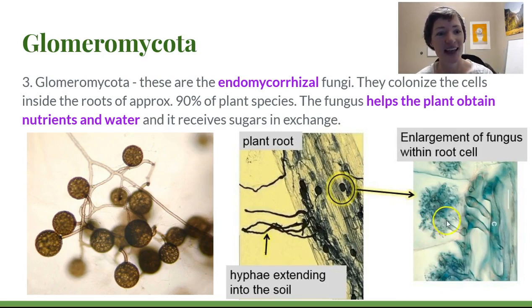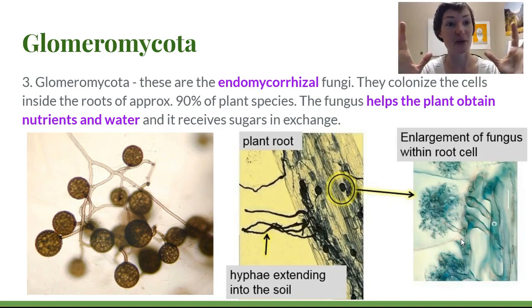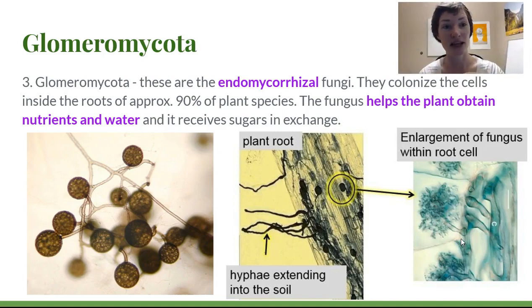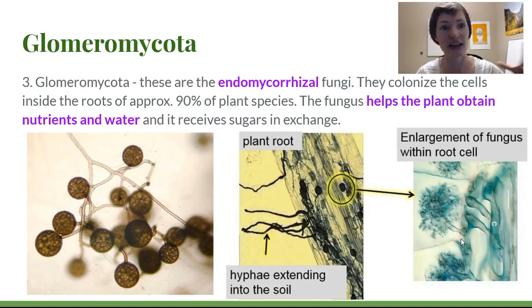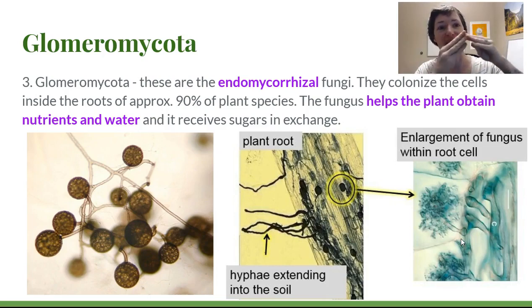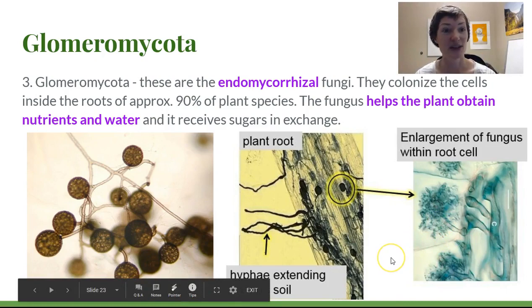Arbuscule means mini tree, and it is a highly branched hyphal structure that forms within the plant cell wall but outside of the plasma membrane. This branching allows for more surface area for exchange. The plant takes water and nutrients like phosphorus and nitrogen — dissolved compounds the fungus can scavenge from the soil — and the fungus takes sugars from the plant because fungi can't make their own food. This is a way fungi can get food while helping the plant access fine soil pores that thick plant roots can't reach.